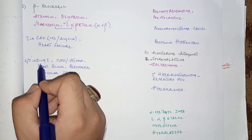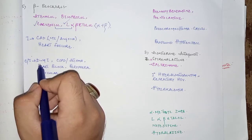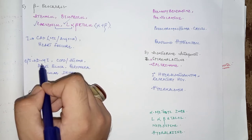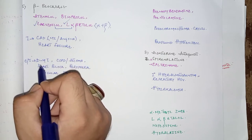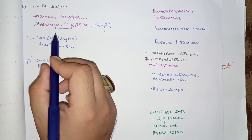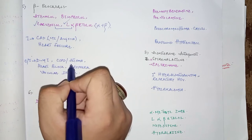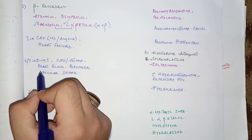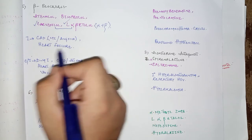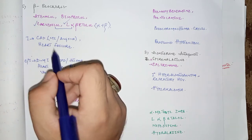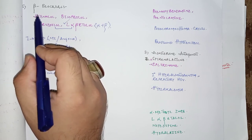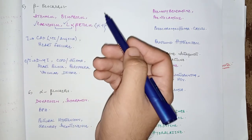Other contraindications for beta blockers are COPD and asthma, because a side effect of beta blockers is bronchoconstriction. Additional contraindications are heart block, peripheral vascular disease, and Raynaud's phenomenon. Beta blockers reduce heart rate and contractility — in short, they are negative inotropic agents.